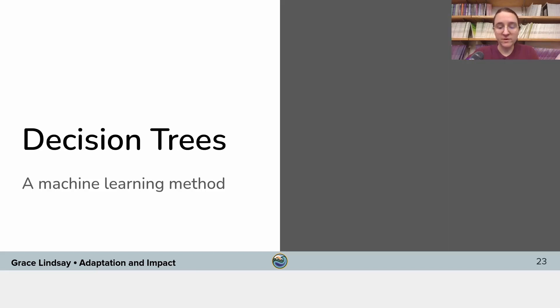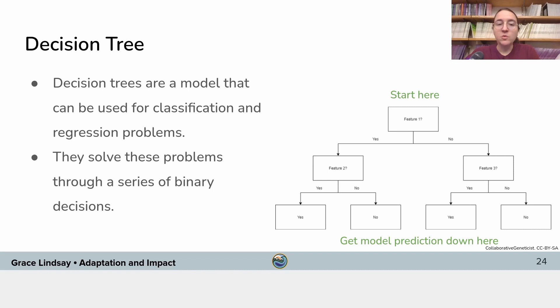So decision trees are a method from machine learning. They're a relatively simple method, but they have many use cases across many different domains. And the way they work is basically that they take inputs that you give to the model, and they ask questions about them. So they try to say, is the value of this input greater than or less than some threshold? And if it is, you go down one path of the tree. If it's not, you go down another path of the tree.